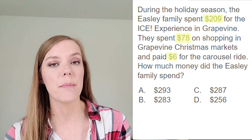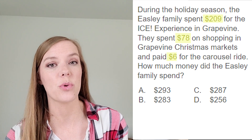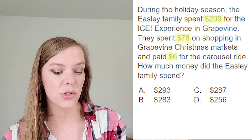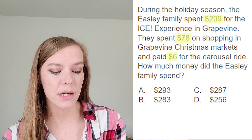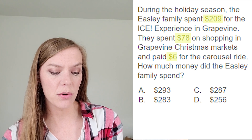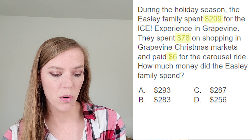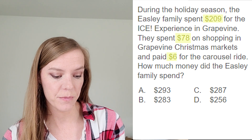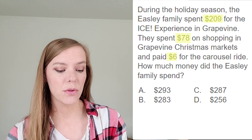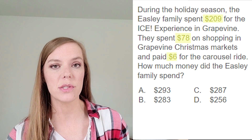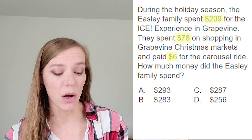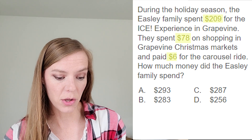On my second read, I start looking at the answer choices too. A says $293, B says $283, C says $287, and D says $256. I'm already noticing that all of them are more than $200 — they're all in the $200 range, which makes sense because the biggest price was $209 and it's only going to go up from there. So we can't really eliminate a choice that's too small. They all look pretty good.